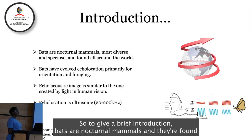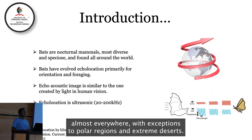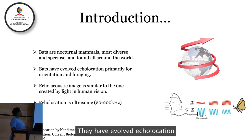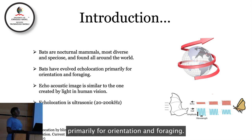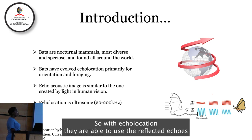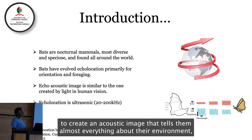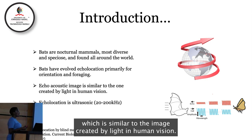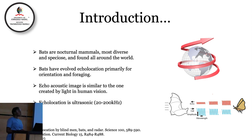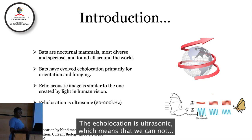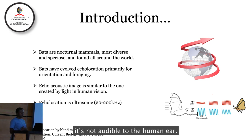To give a brief introduction, bats are nocturnal mammals and they are found almost everywhere, with exceptions to polar regions and extreme deserts. They have evolved echolocation primarily for orientation and foraging. With echolocation they are able to use reflected echoes to create an acoustic image that tells them almost everything about the environment, similar to the image created by light in human vision. Echolocation is ultrasonic, which means it is not audible to the human ear.